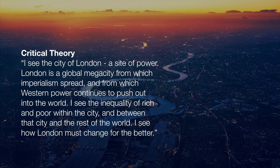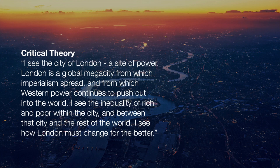Critical theorists might look at a city like London and see it as a site of power — a global megacity from which imperialism spread, and from which Western power continues to push out into the world. A critical theorist will see the city but also note the social relations within it: the inequality of rich and poor, differentials around voting for issues like Brexit, and the differentials between the city of London and the rest of the world, and how that power inequality plays out. They'll also have ways to transform London and its relationship with other parts of the world for the better in socially just ways.